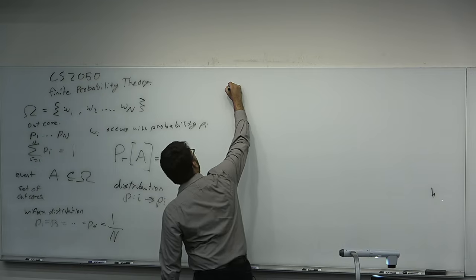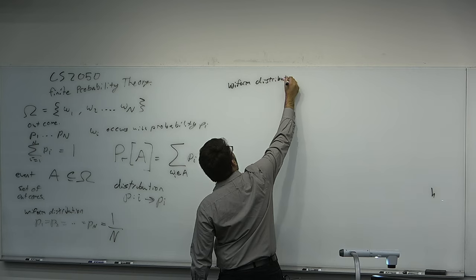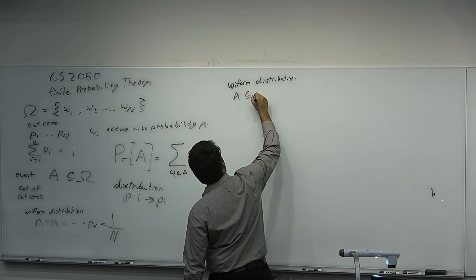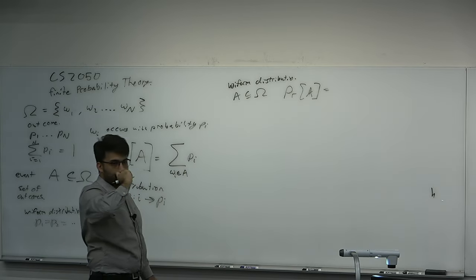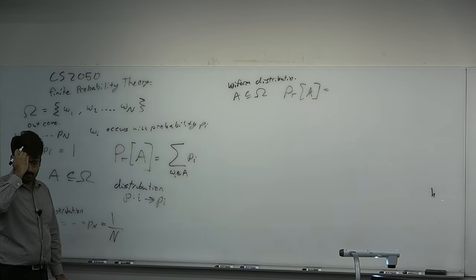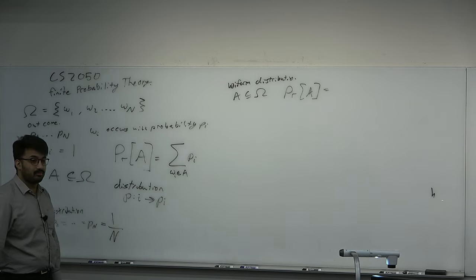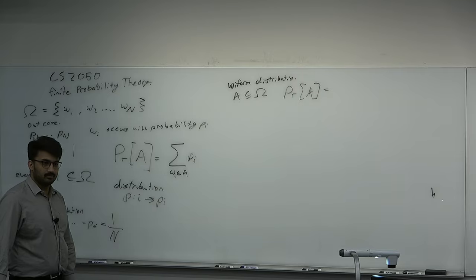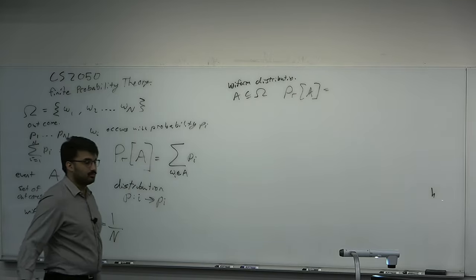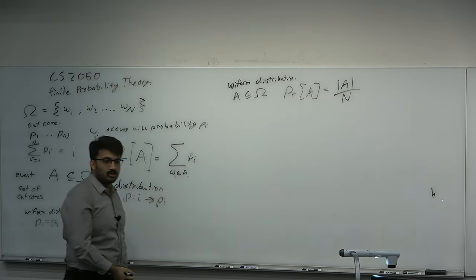If you have the uniform distribution — and if unstated in this class we'll assume it's uniform — and you have some event A, what is the probability of event A? It's the cardinality of A divided by n. Yeah, it's just the number of elements in A divided by n. It's uniform.